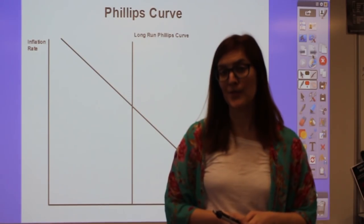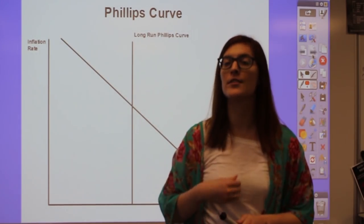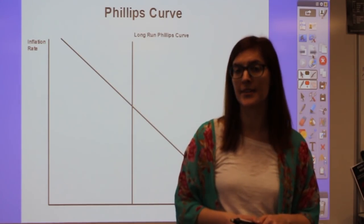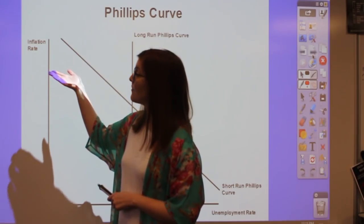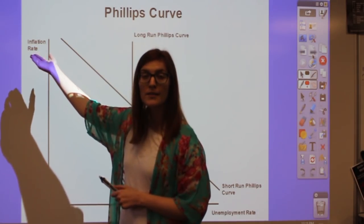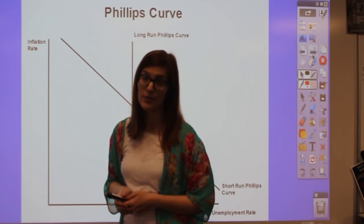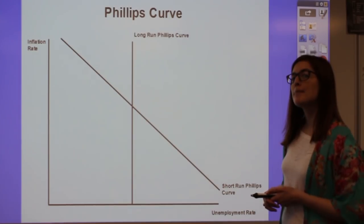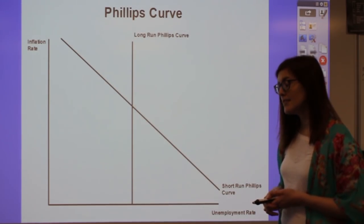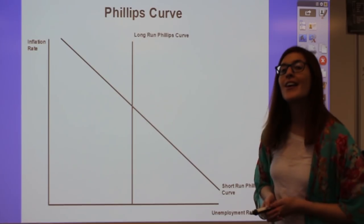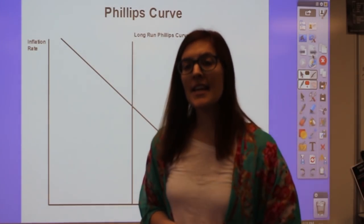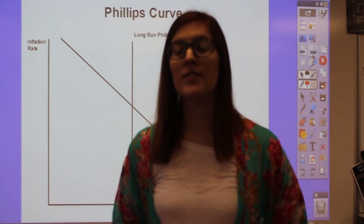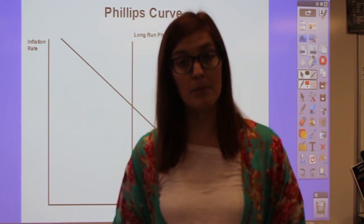Next is the Phillips curve, which is very similar to the aggregate model. It takes two key topics from the aggregate model: price level on the Y-axis—which goes hand in hand with inflation—becomes the Y-axis of the Phillips curve; and GDP on the X-axis, since whatever happens to GDP, unemployment does the opposite, so unemployment becomes the X-axis. We have both a short run and long run Phillips curve, used similarly to the aggregate model.